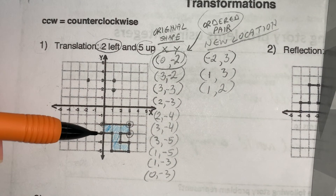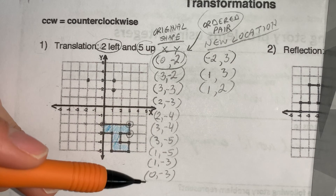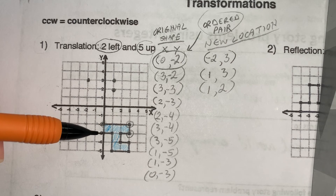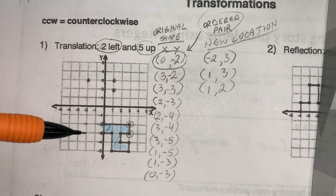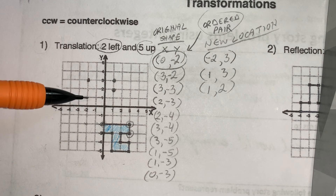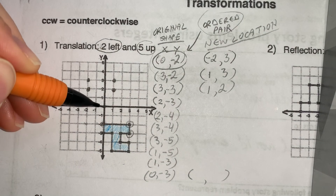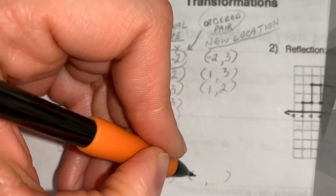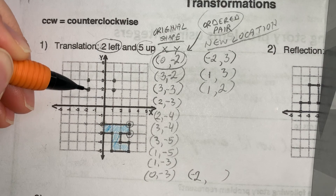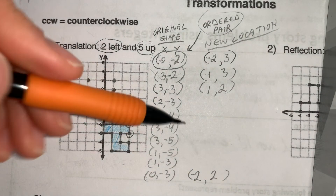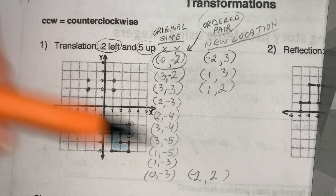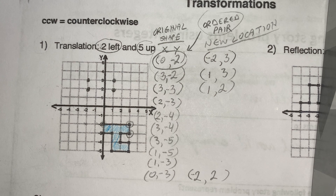How about the last one? The last coordinate in the new location: two to the left — one, two — and five up — one, two, three, four, five. The new x-coordinate counting from zero on the x-axis is negative one, two — negative two. And on the y-axis: one, two — positive two. So that's (-2, 2). Now you have to do six more on your own. In the next video you'll be able to verify that you got it correctly. Go ahead and chip away.